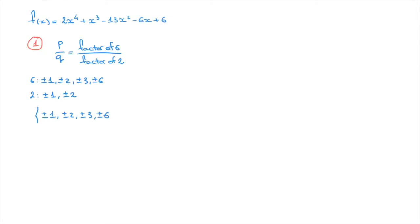Now say the factor of 2 is 2. Dividing the factors of 6 by 2 gives: ±1/2 (new), ±2/2 = ±1 (already listed), ±3/2 (new), and ±6/2 = ±3 (already listed). So the complete list of potential rational zeros is ±1, ±2, ±3, ±6, ±1/2, and ±3/2. That's the end of step 1.